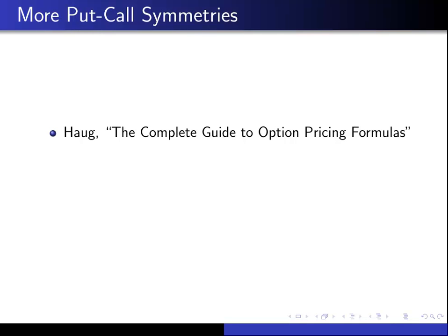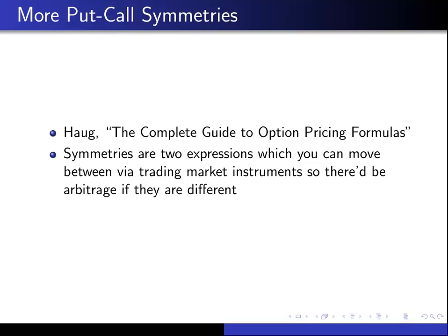In this quick lesson, we're going to finish up on the book called Symmetries, which we're taking from HOG, the complete guide to Option Pricing Formulas. Symmetries are two expressions which you can move between via trading market instruments, so they'd be arbitrage if they were different.